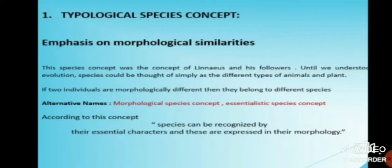Alternative names for the typological species concept include the morphological species concept and the essentialistic species concept. According to this, species can be recognized by their essential characters, which are expressed in their morphology.